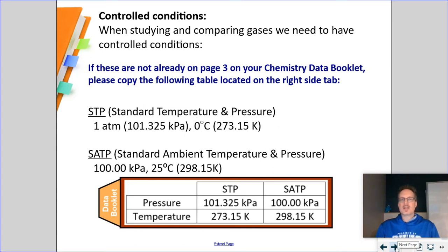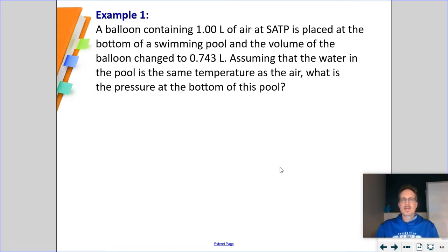What I would like to do is try one question, talk about all the nuances that go with this formula, and then I'll have you try three questions on your own. So, very first question we have. Let's read through it together. A balloon contains one liter of air at SATP. A balloon is placed at the bottom of a swimming pool, and the volume of the balloon changed to 0.743 liters. Assuming that the water in the pool is the same temperature as the air, what is the pressure at the bottom of the pool? So, we're assuming that the temperature of the water is going to be the same. It's constant. We're also assuming we're not going to lose or gain any particles of water. It's also going to be the same.